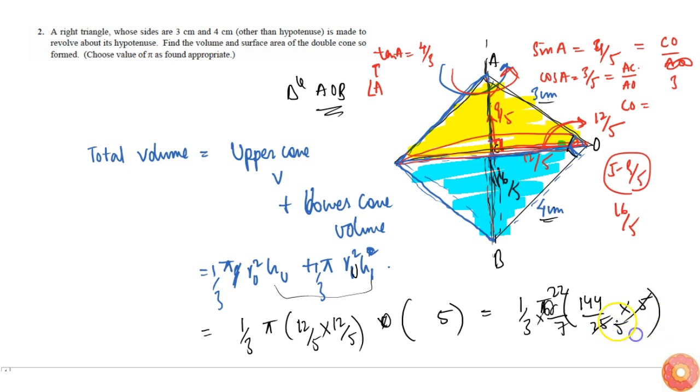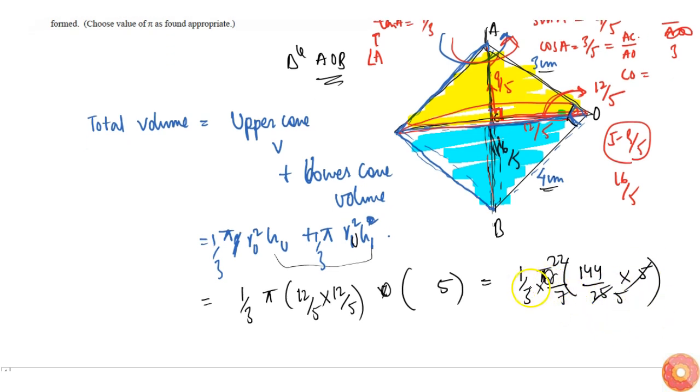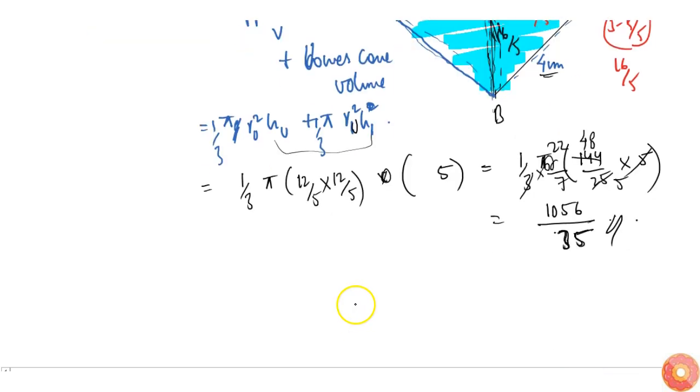So this will be 3 into 144. This will be 48 times. So this is simply 22 into 48, which will be 96 plus 96, is 1056. 1056 by 35. So this is what we get, this is the total volume.